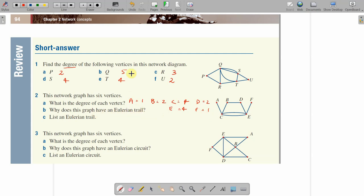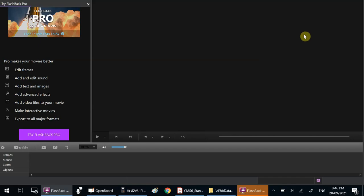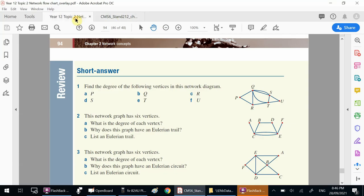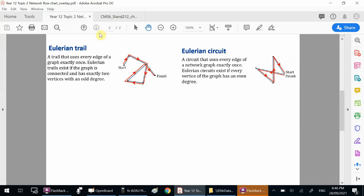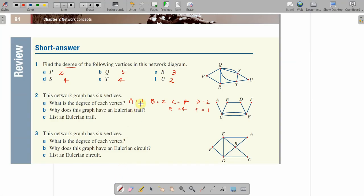Why does this graph have an Eulerian trail? An Eulerian trail exists if the graph is connected, which it is, and has exactly two vertices with an odd degree. Well, we've got that - vertex A is one and vertex F is one, so it has two vertices of odd degree, exactly two vertices with an odd degree.